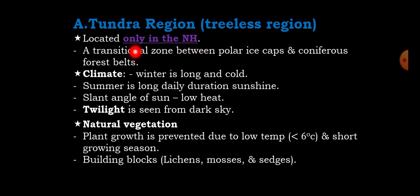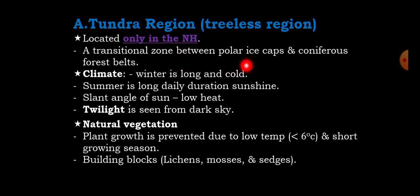The frigid zone is classified into two types: the tundra region, also called the treeless region, and the polar ice cap. The word tundra means treeless region — a region which doesn't have trees, located only in the northern hemisphere. It is a transitional zone between the polar ice cap and the coniferous forest belt, and it is called the tundra region.